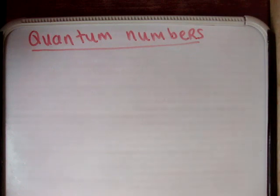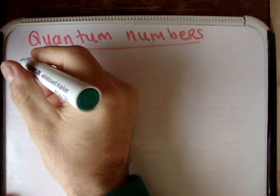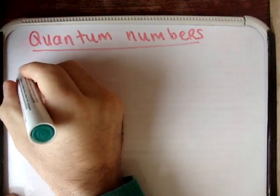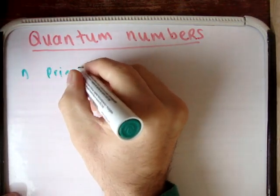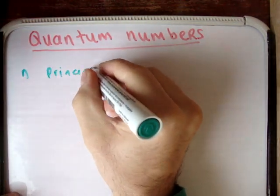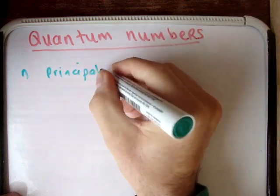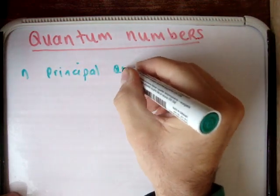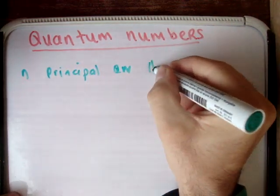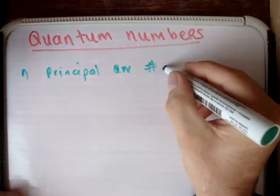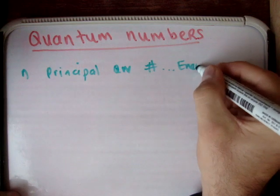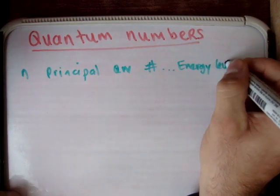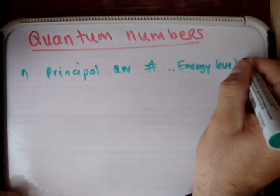The first one I'd like to introduce is n. n is an integer and it's called the principal quantum number. This gives you your energy levels.